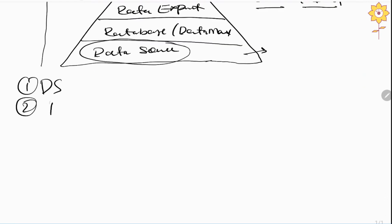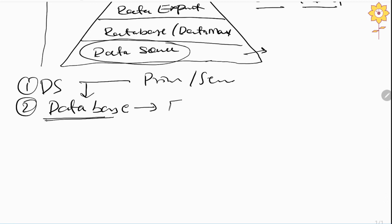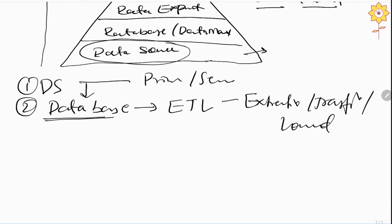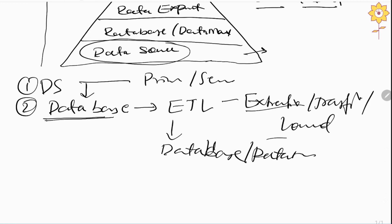Once the data has been collected, the second component is the database. Whatever data we collected in the data source phase — using primary or secondary technique — we need to generate a database out of it. We apply the ETL tool, which stands for Extraction, Transformation, and Loading. We apply this ETL technique to build the database or data mart.